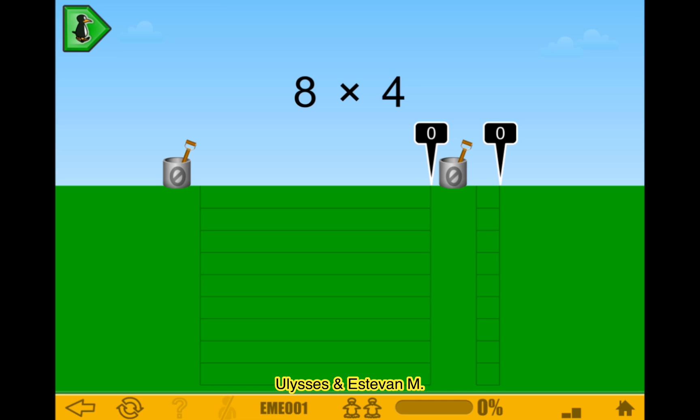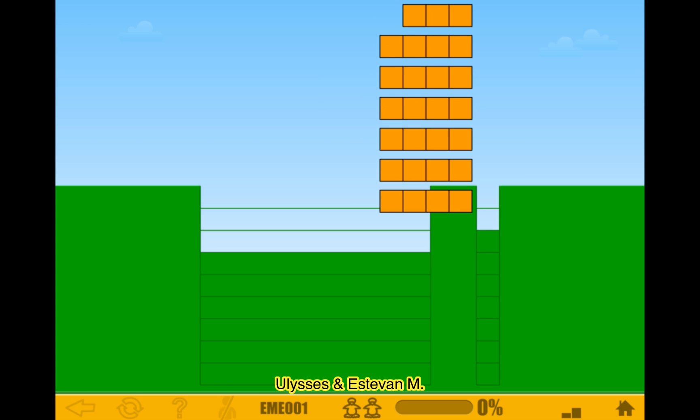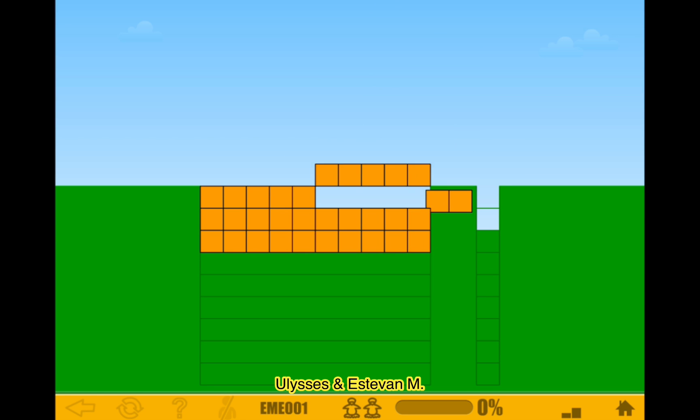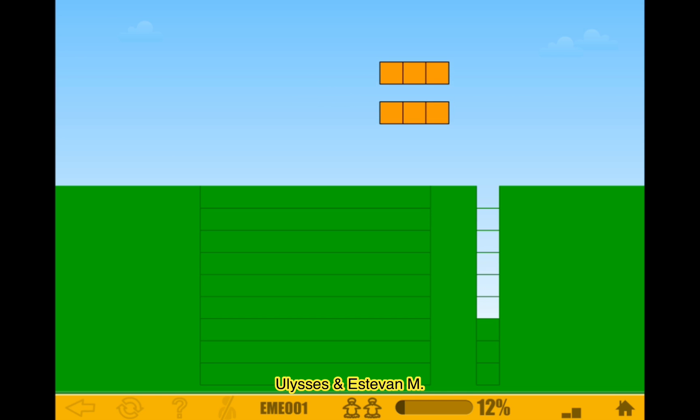8 times 4 is 32. Nope, 32. Simple right, Rexy? Yeah. Oh, there's going to be extra 2. Oh. Okay, 2 times 3 is 6. This is so simple. What is this? Simple math now. And that was simple.